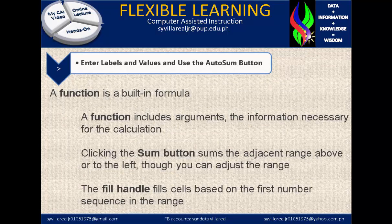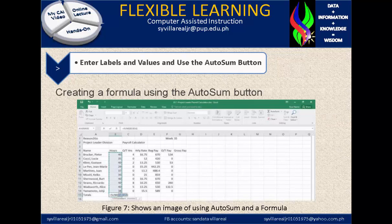A function is a built-in formula. A function includes arguments — the information necessary for the calculation. Clicking the sum button sums the adjacent range above or to the left, though you can adjust the range. The fill handle fills cells based on the first number sequence in the range. Figure 7 shows an image of using autosum and the formula.